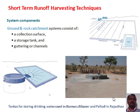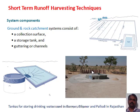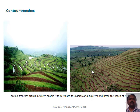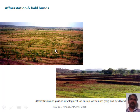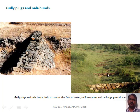Here we can see short-term runoff water harvesting techniques. This is a catchment area with tanks for storing drinking water used in Barmer, Bikaner, and Pallodi in Rajasthan. Contour trenches have been made to trap water, as visible in the photographs. Bunds have been fixed to trap water, and plants have been planted over them. Gully plugs and nala bunds are used to store water for short durations.